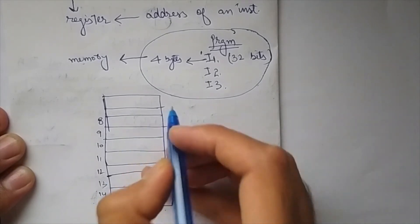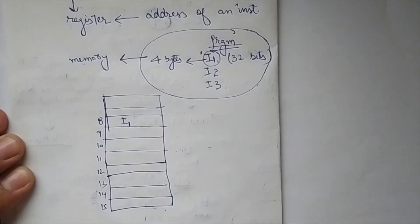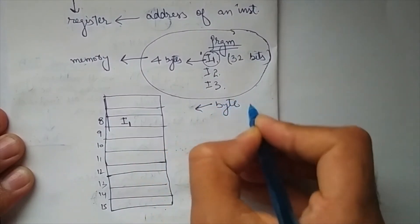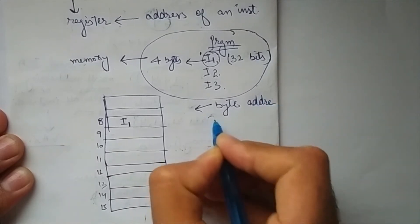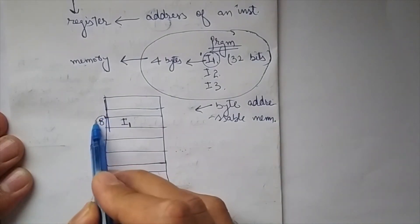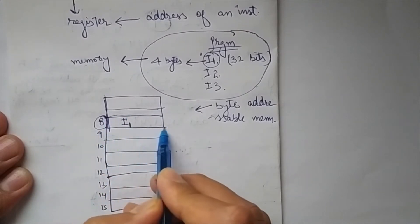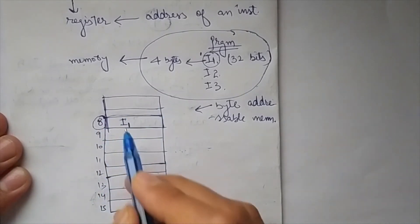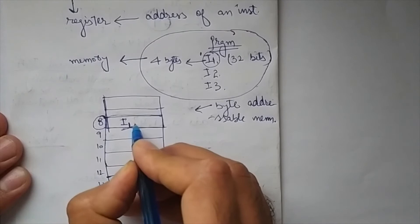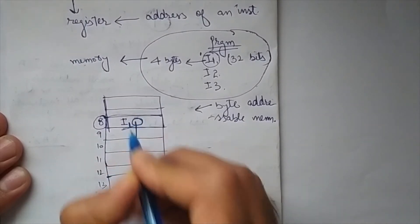Let's say the addresses are 8, 9, 10, 11, 12, 13, 14, 15, and so on. Instruction I1 is stored at address 8. This is a byte-addressable memory, which means each address corresponds to one byte, so each location can store one byte. An instruction is 4 bytes.